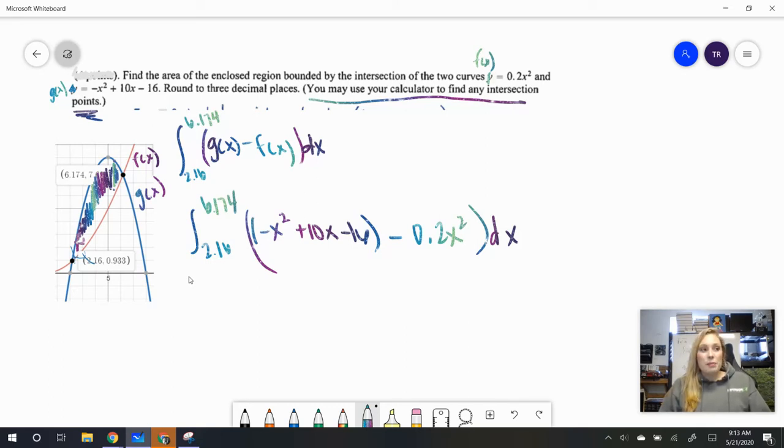Now we are going to want to do some simplifying. So when we subtract this, we are going to combine like terms. When I subtract 0.2 from already a negative 1, I'm going to get negative 1.2x squared plus 10x minus 16 dx.